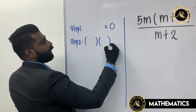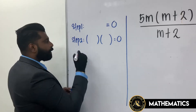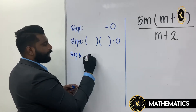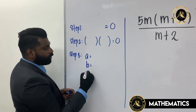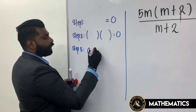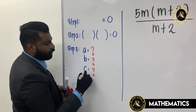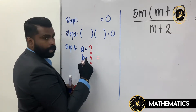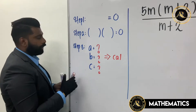Step number two: you must make sure there are two brackets, and then equals to zero. Step number three: you need to find the value of a, b, and c. For example, find your a value, your b value, and your c value. Once you find a, b, c, you are not going to calculate them yet.